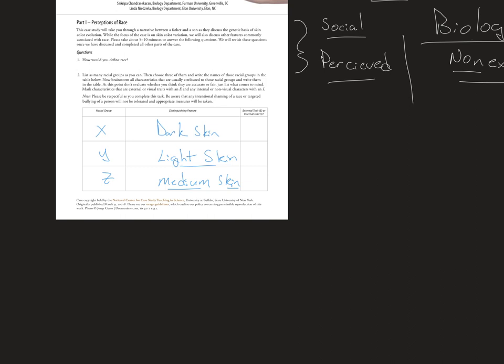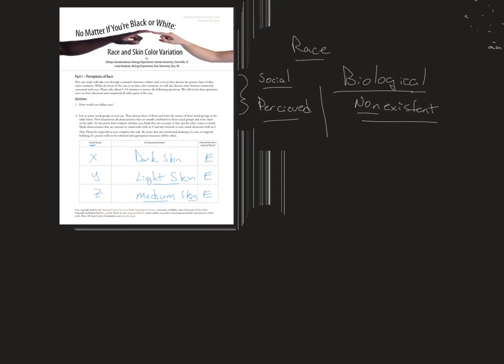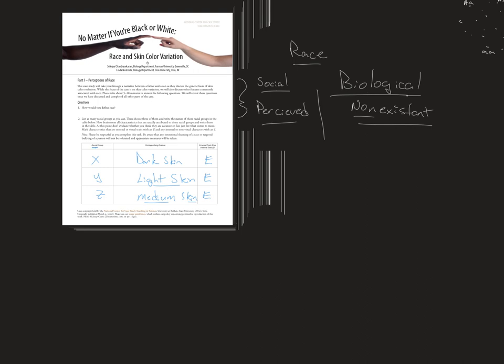We can ask: is this an external trait or an internal trait? In most cases when it comes to the idea of race, they're really just external features or traits that we can identify. We don't really get down to the gene — the thing that's inherited — because you don't inherit skin color directly. You inherit a gene or set of genes whose result is skin color. There is a correlation, but it's not one to one.